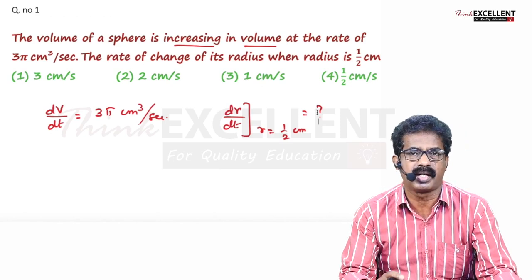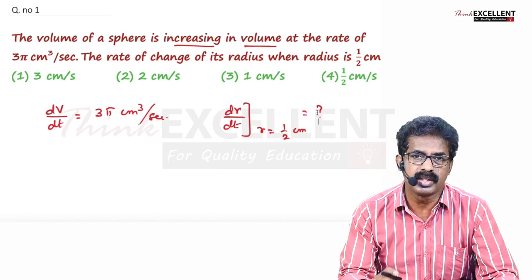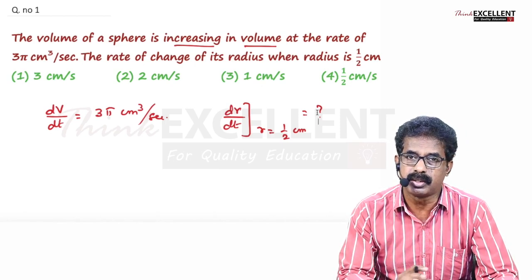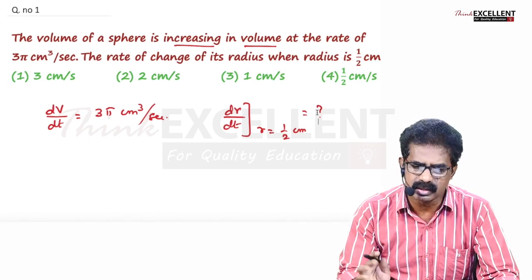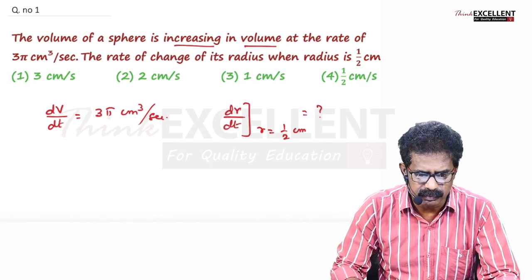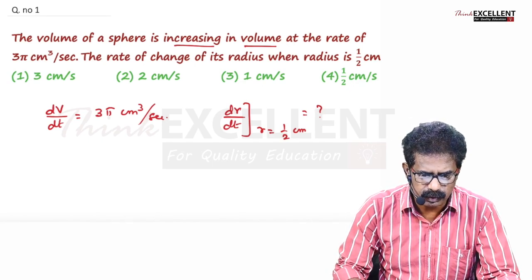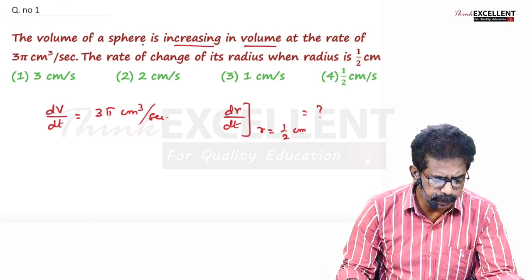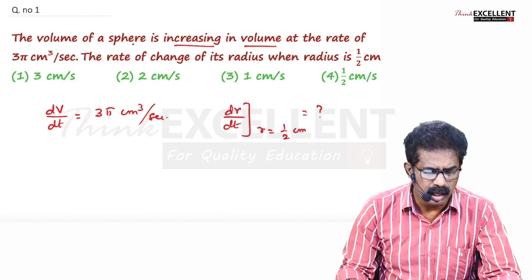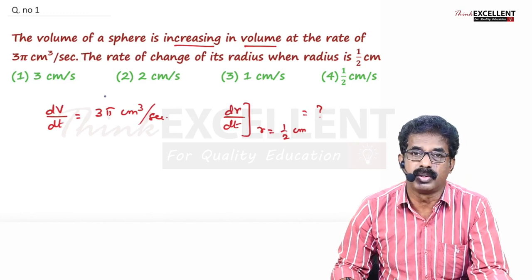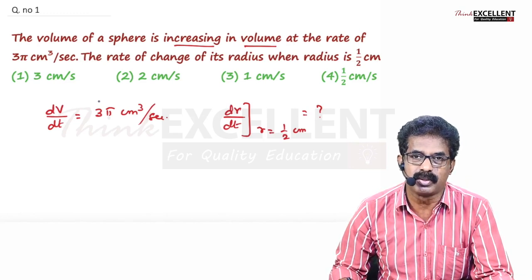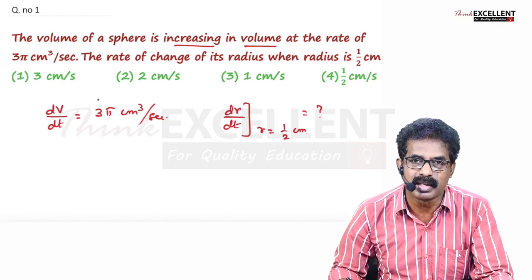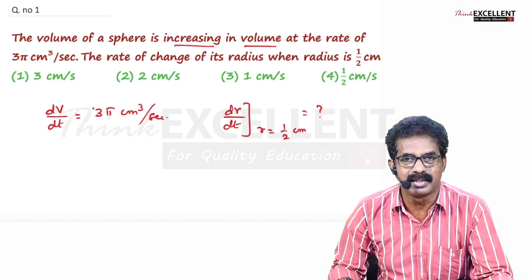Choose the right formula, differentiate with respect to t, substitute the known values, and you will get the answer. That's a very simple thing. This is a sphere and volume, so you have to start with the volume of a sphere. You must know the formula studied in 10th standard.